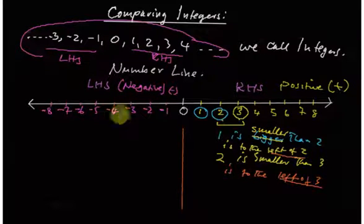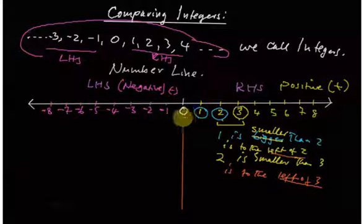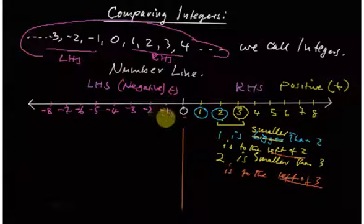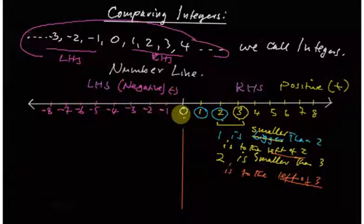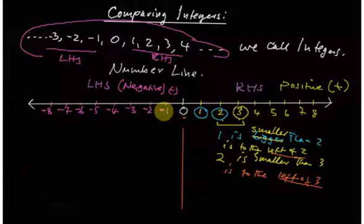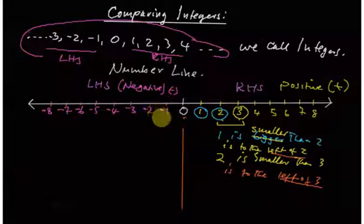Now compare zero and one. Zero is smaller than one — if you don't have anything and someone has one, that one is bigger. You see that zero is to the left of one. Now compare zero and negative one: if you don't have anything but someone has to give away one, you are better off than they are. Negative one is to the left of zero, so zero is bigger than negative one.